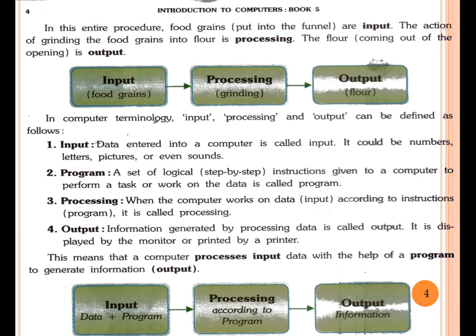So students, let me explain aapko aur achhe se. Input, processing, aur output kya hota hai: food grains put into the funnel are input. The action of grinding the food grains into flour is processing — grinder is your processor because it grinds and crushes the grain. The flour coming out of the opening is output. Neechhe ek chhota sa image diya hua hai aapke book ke page number 4 par — three boxes mein chain dikha rahi hai: food grains is input, grinding is processing, and output is your flour.